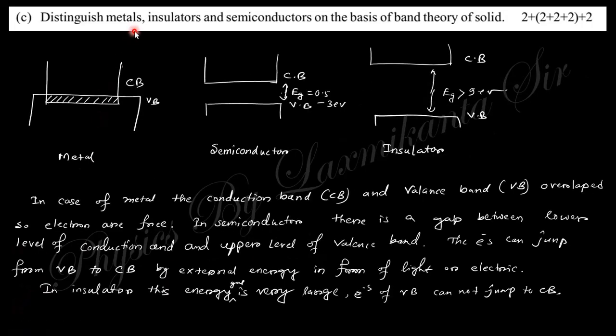Next is to distinguish metals, insulators, and semiconductors on the basis of band theory of solids. For metal, semiconductor, and insulator, they will be like that. For metal, the conduction band and valence band are overlapped, so the electrons can balance and conduct, so these are free electrons. In semiconductors, there is an energy gap between the lower level of conduction band and upper level of valence band.